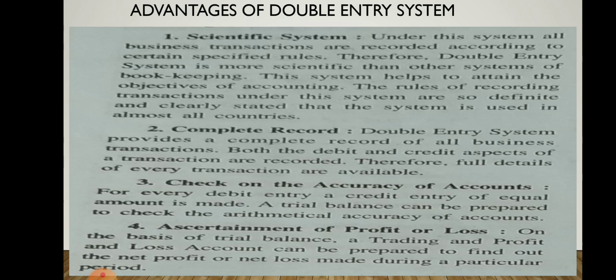The second point is a complete record. The double entry system provides a complete record of all business transactions. Both the debit and credit aspects of every transaction are recorded. Therefore, the full details of every transaction are available, providing a full and complete record of all transactions.